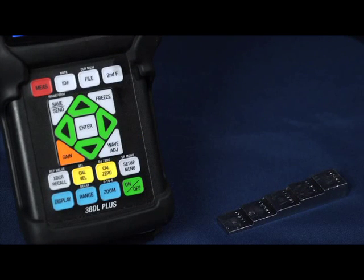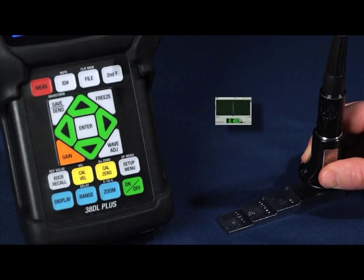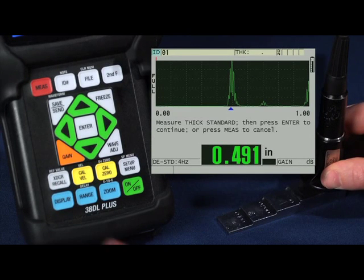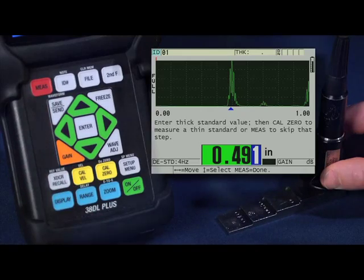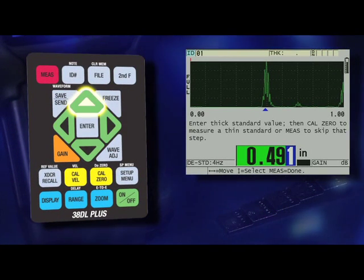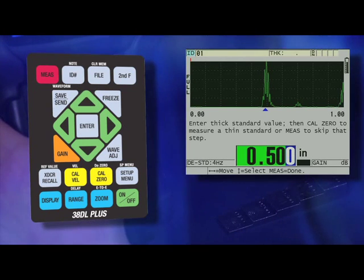Simply couple to your thick standard, in this case the five hundred thousandths step, and press the CALVAL key. Once we have a steady reading, press the ENTER key. You can now use the right, left, up or down arrow keys to enter in the known thickness value of the standard.